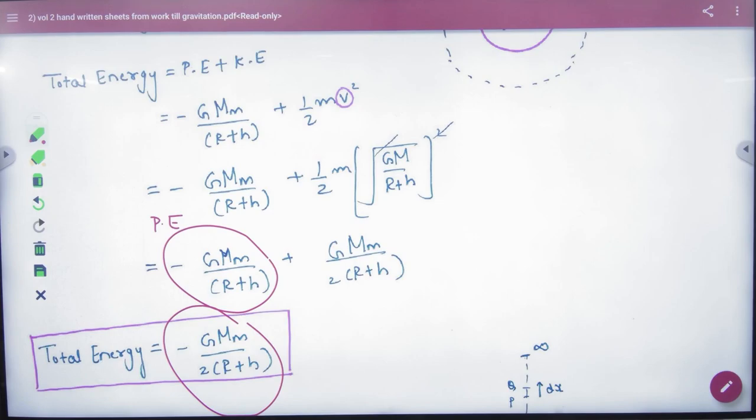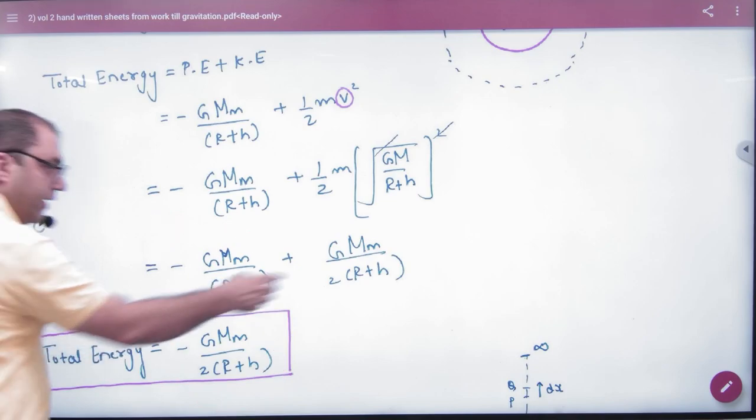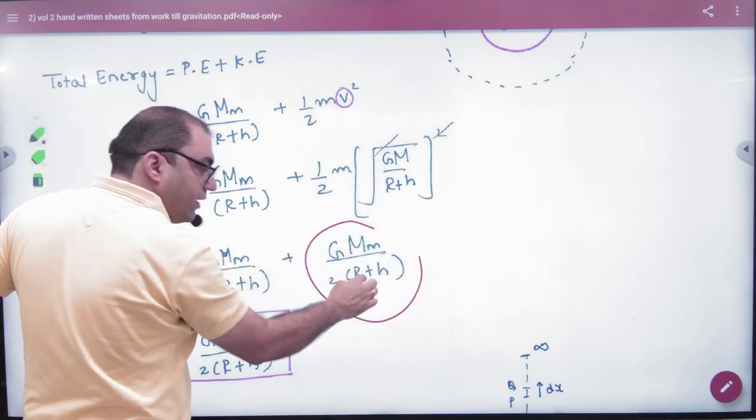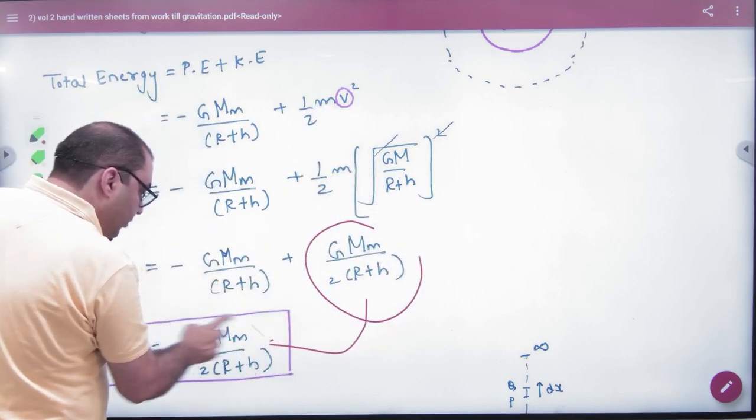See the way to remember. Potential energy and total energy differ by 2. It is not kinetic energy. Simplify it is kinetic. It is just a minus sign.